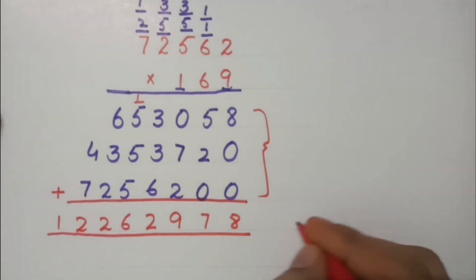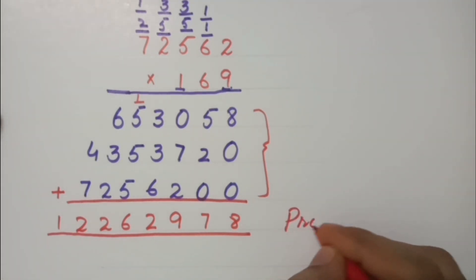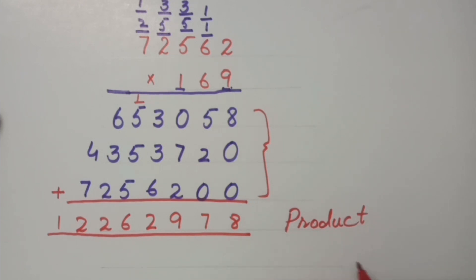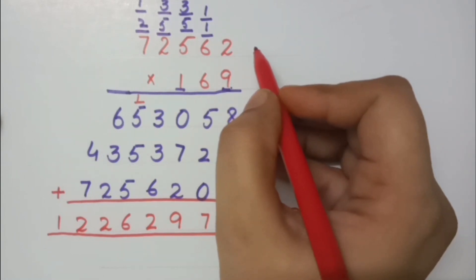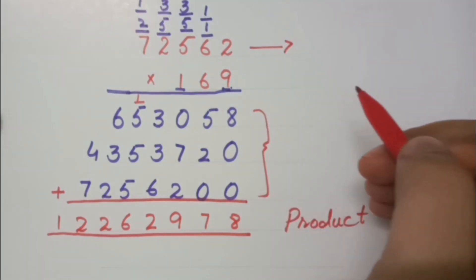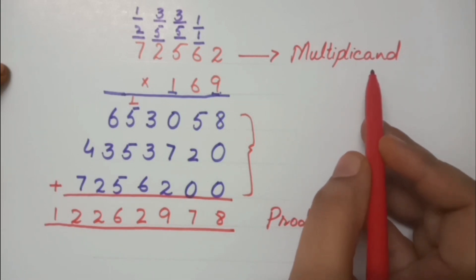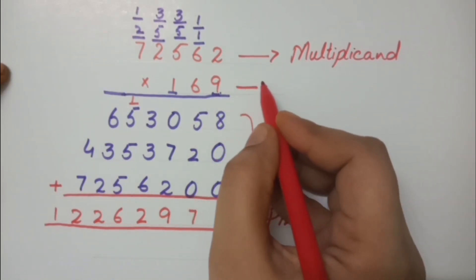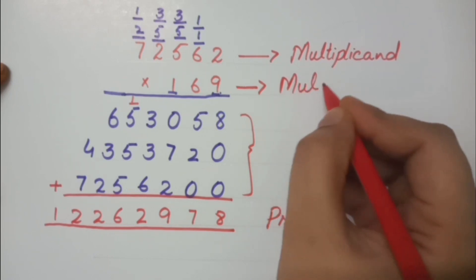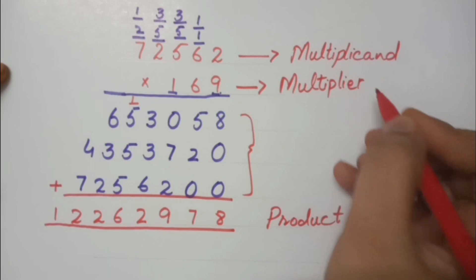This is called the product of the multiplication. Product means whatever answer we get after multiplication is called the product. Now if we have to do multiplication, the first part which is to be multiplied is called the multiplicand. The multiplicand has to be multiplied with the multiplier.